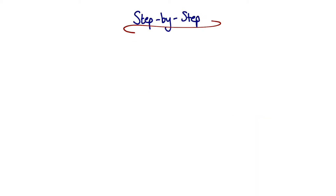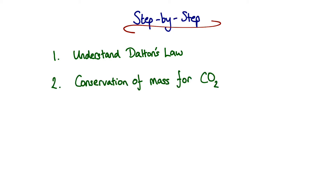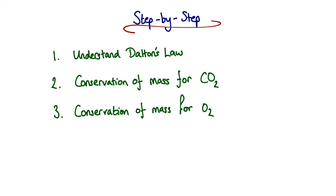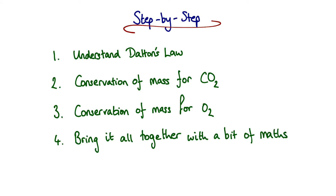There are essentially four key steps to the derivation. The first is a firm understanding of Dalton's law and some terms that allows us to generate. We then look at conservation of mass for CO2 — essentially that what's produced by the body must be coming out the lungs at steady state — which gives us a slight sidebar into the alveolar ventilation equation. We do the same thing for oxygen, and then bring it all together with a bit of maths at the end.